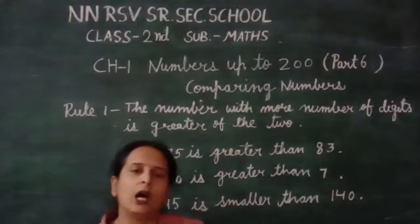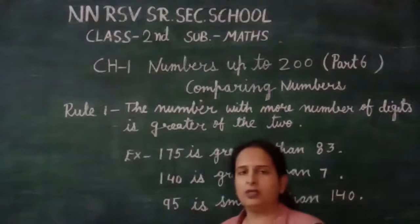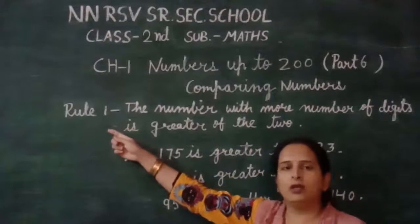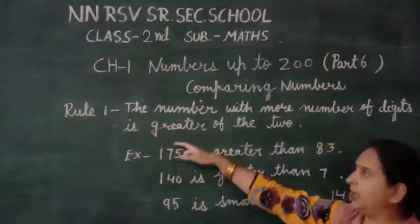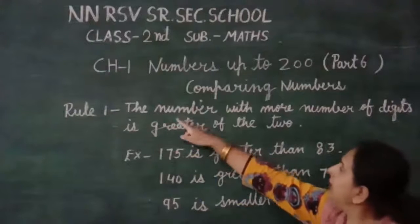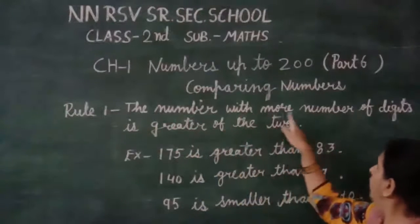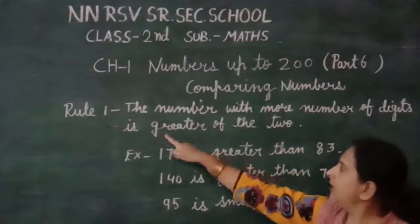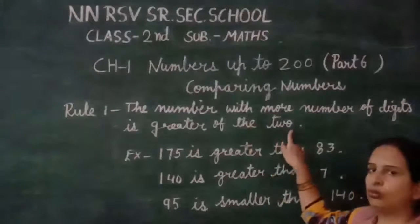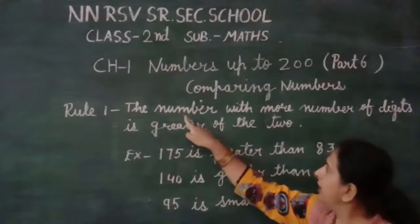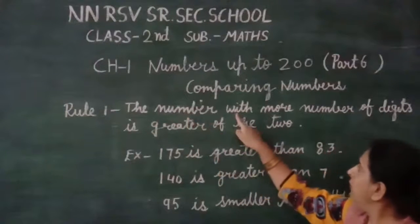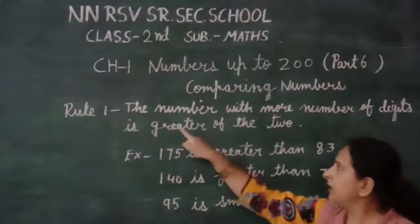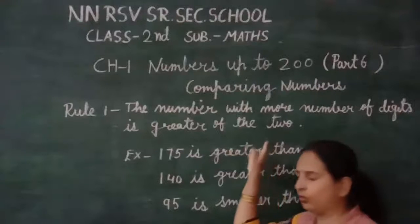Let's discuss how to compare the numbers. Here is Rule No. 1: The number with more number of digits is greater of the two.